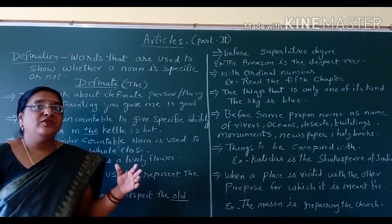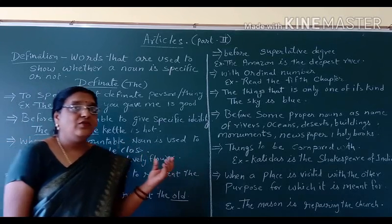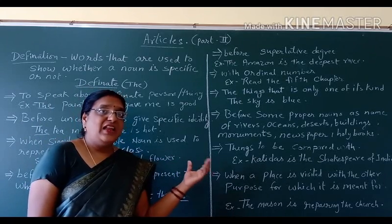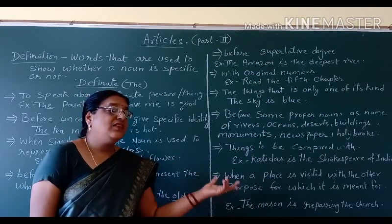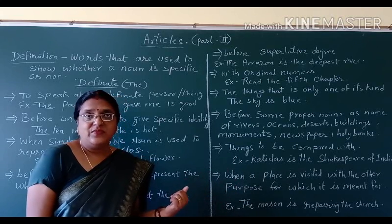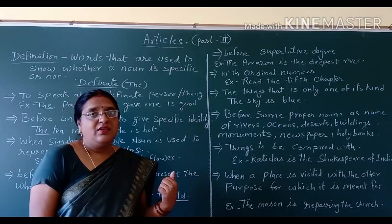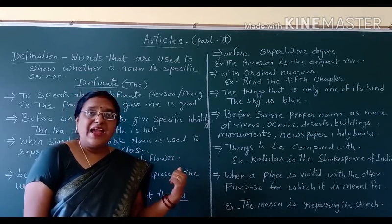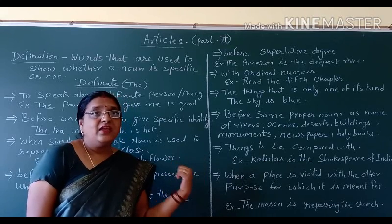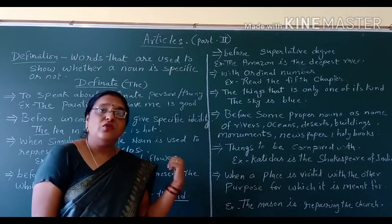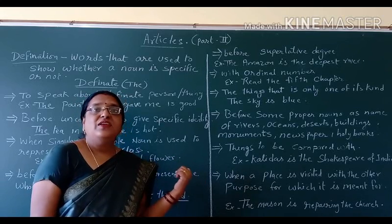Other than this, there are cases where no article or zero article is used — that means we omit articles. With proper nouns — that means place names, person's names — we don't use any articles. With uncountable nouns, we don't use any articles. With the name of games — cricket, football — we don't use articles. But if we are talking about the football match, the tournament, the FIFA club, or the World Cup, then we use articles. If we are talking only about the name of games or the name of a subject, we don't use any articles.